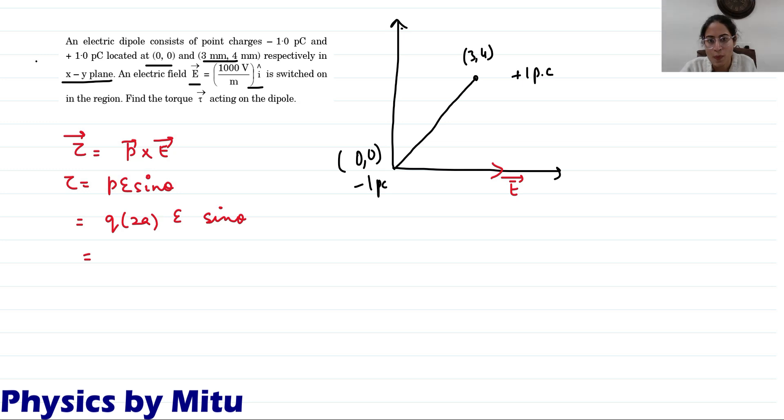The charge given is 1 picocoulomb. We write the magnitude of charge: 1 picocoulomb is 10 raised to minus 12 coulomb into 2A. This distance - what will be this distance? You have given this coordinate of 3 units and this is 4 units. By Pythagoras theorem 3, 4, this will be 5 mm.